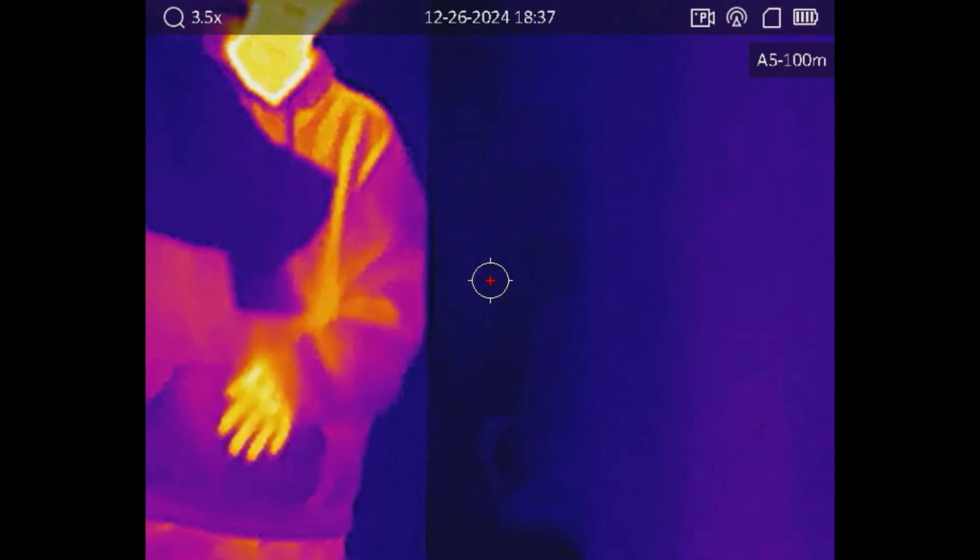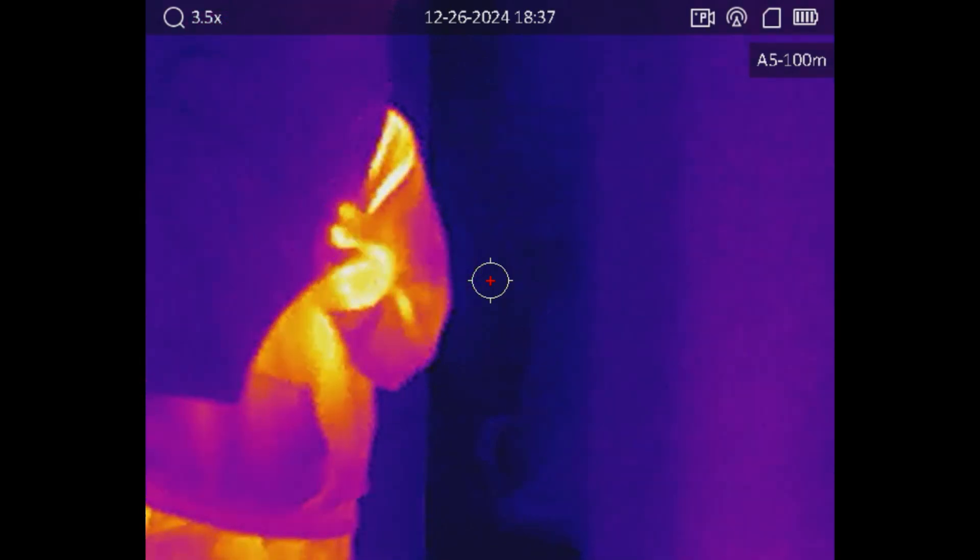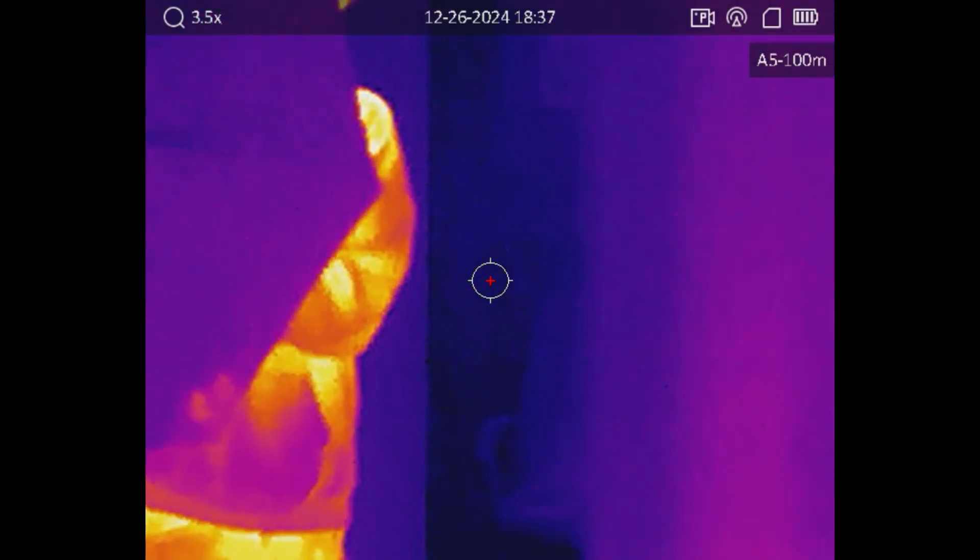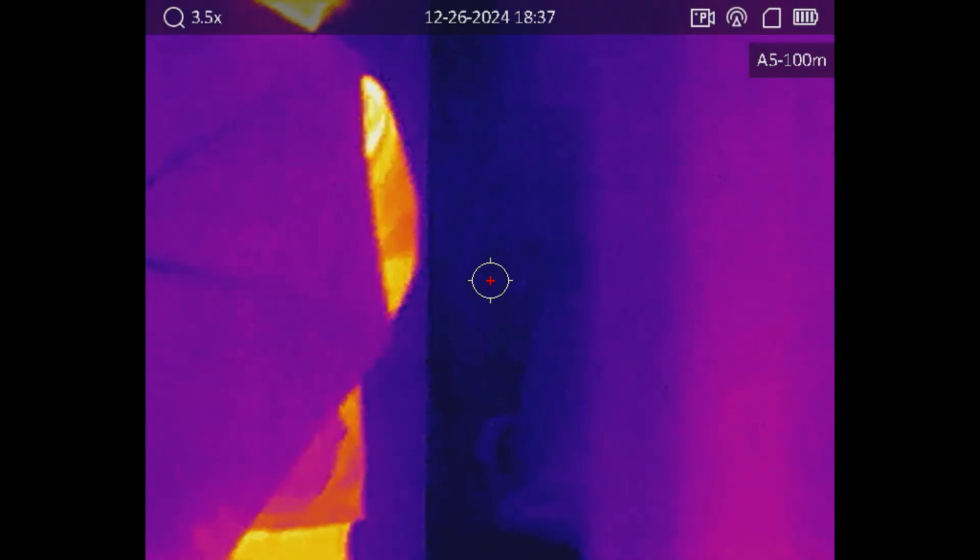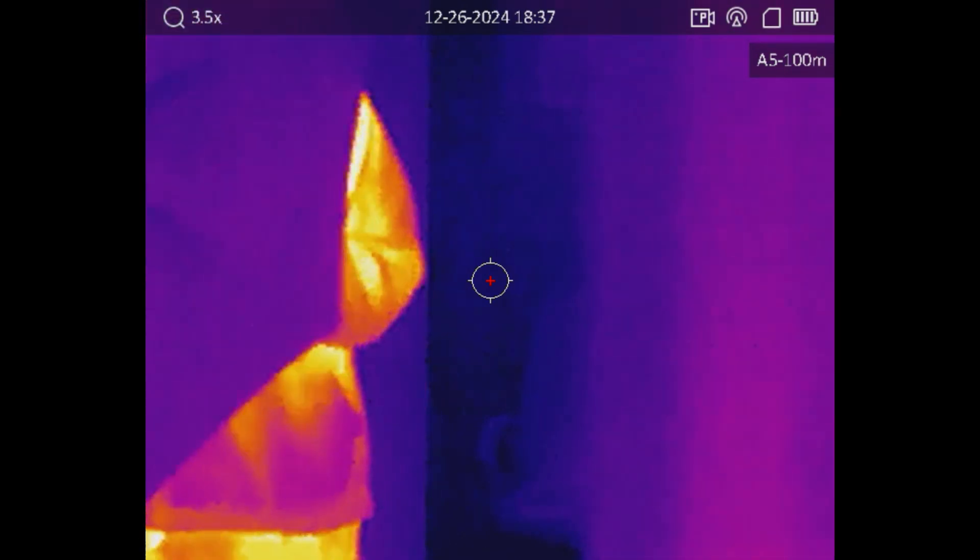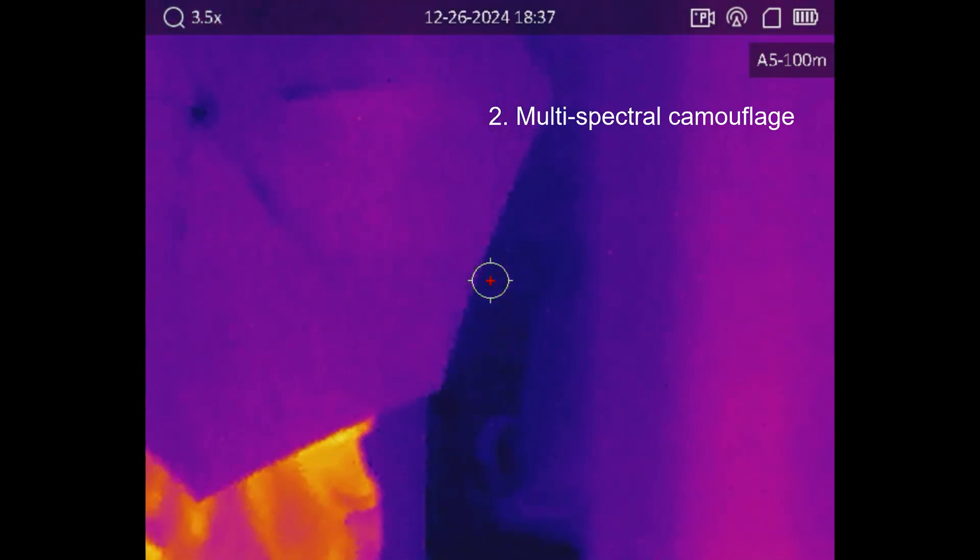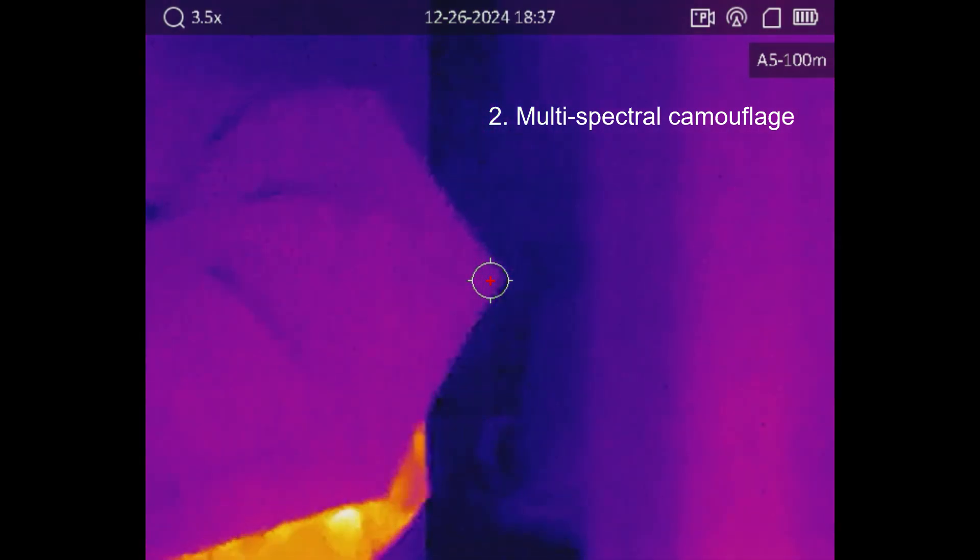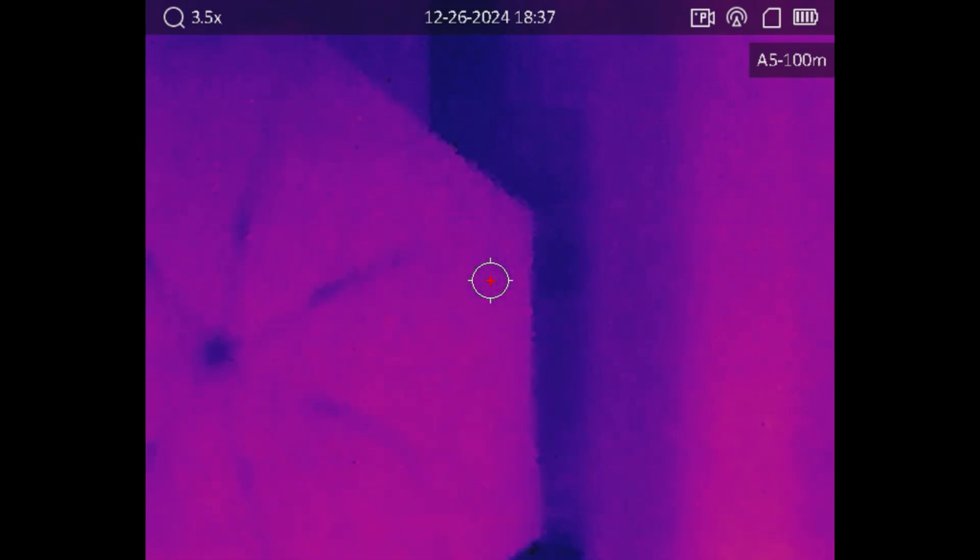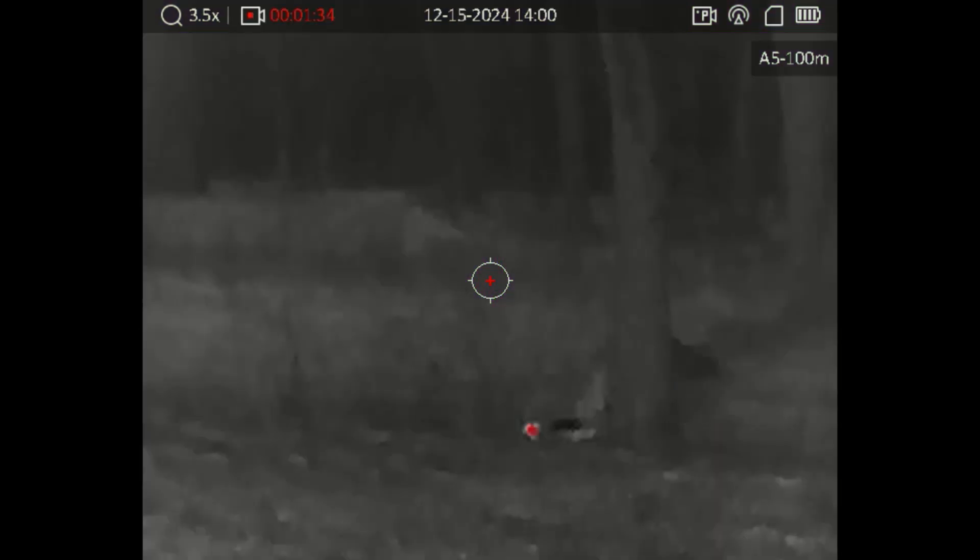The second thing to keep in mind is, while something might help reduce your thermal signature, it also has to maintain your camouflage in the visible spectrum and the near-infrared. You can't compromise concealment in visual and near-infrared just to hide from thermal. If you wrap yourself in that reflective mylar blanket, you're doing more harm than good because everybody else can see you, including the thermal operator, probably.